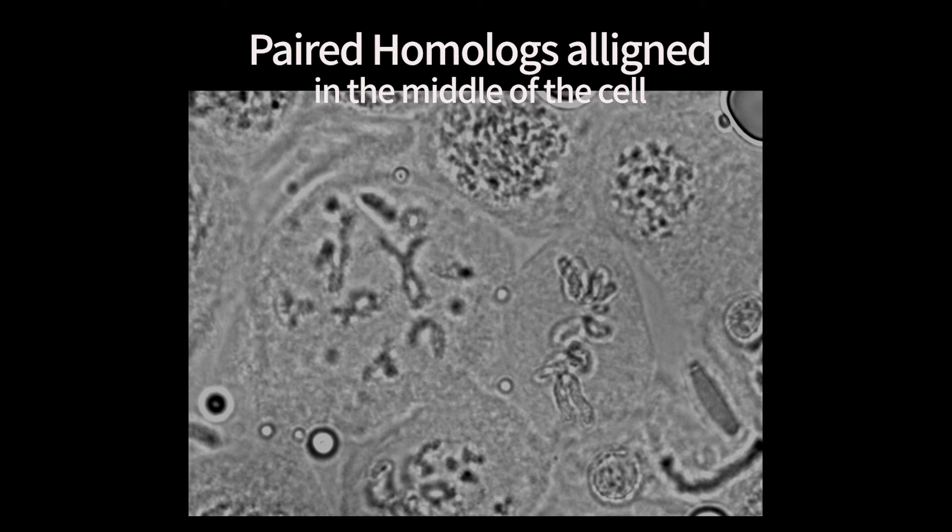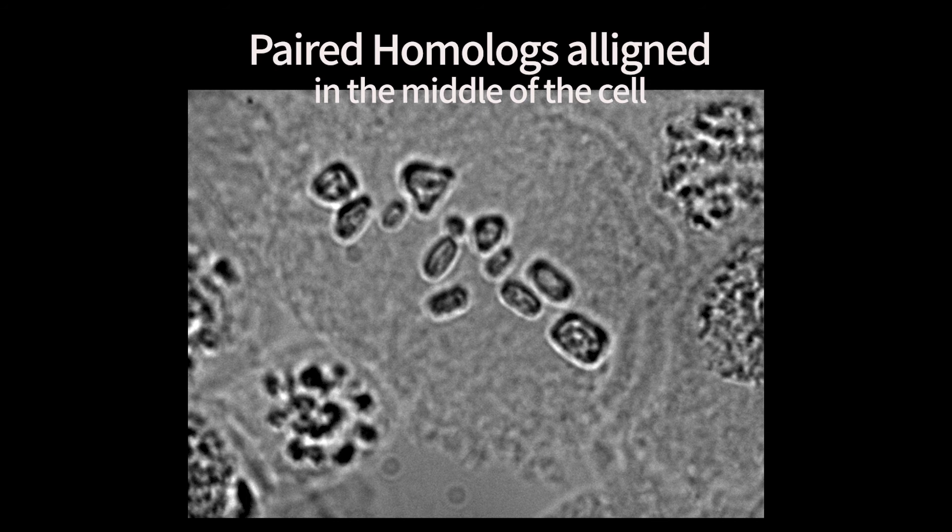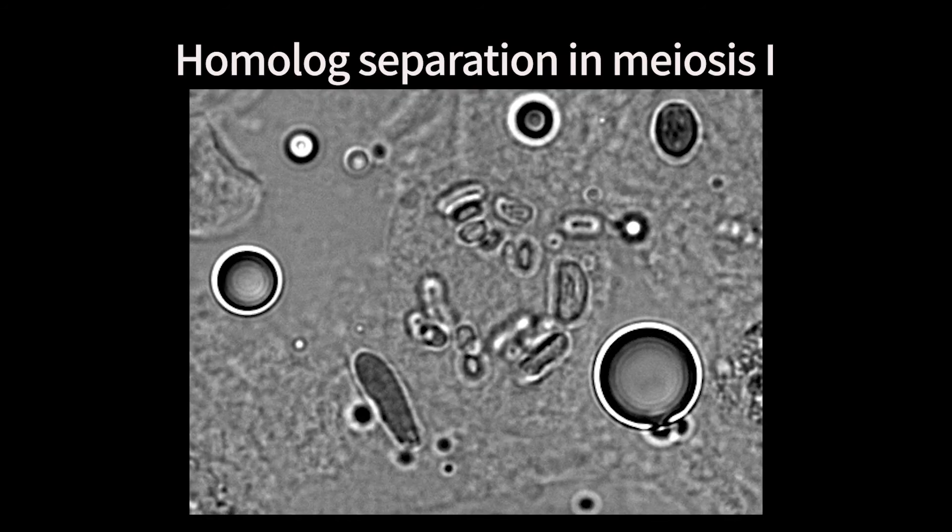Here are cells in which the paired homologs are already aligned in the middle of the cell. And here is a cell caught in the process of separating its homologs just before completing the first meiotic division.